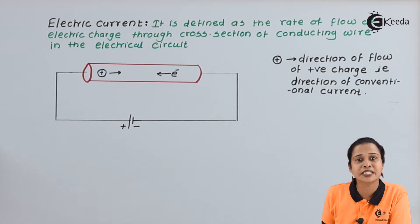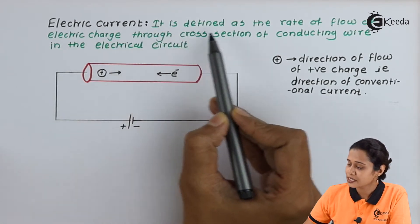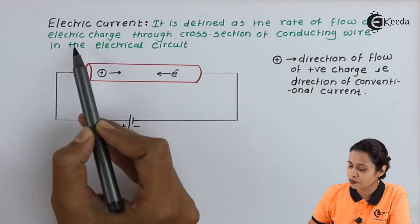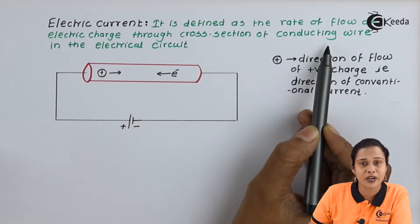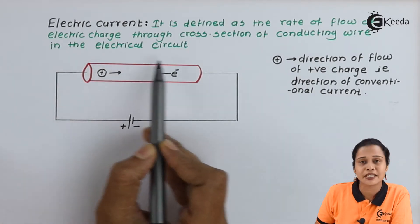Now electric current, we will see what is the definition of electric current. Electric current is defined as the rate of flow of electric charge through cross-section of conducting wire in an electric circuit.